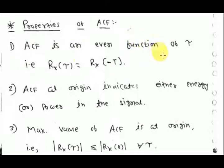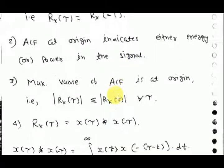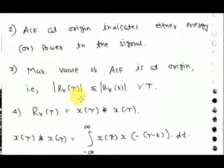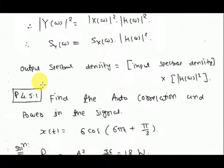The properties of the autocorrelation function (ACF): First, the ACF is an even function of tau. Second, the ACF at the origin indicates either energy or power in the signal — so if you need to calculate power or energy, put tau equal to zero and you will get it. Third, the maximum value of the ACF is always at the origin. The ACF can also be represented in terms of convolution: the ACF equals x(tau) convolved with x(minus tau).